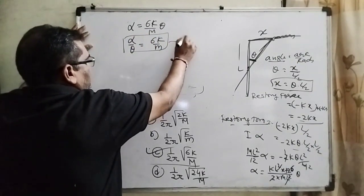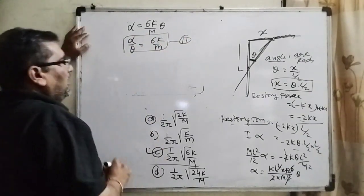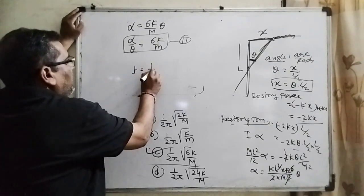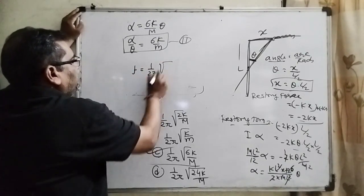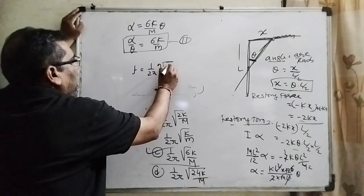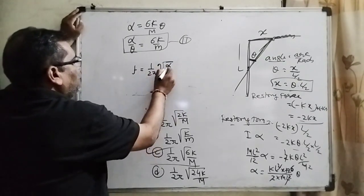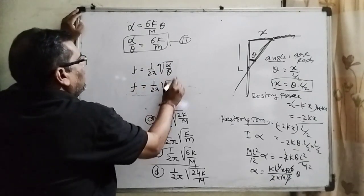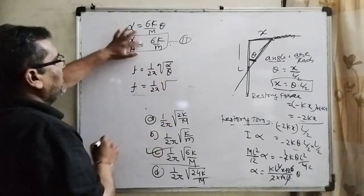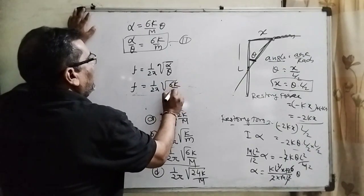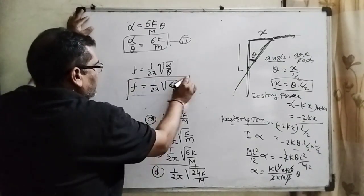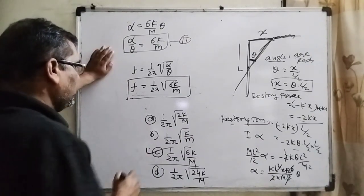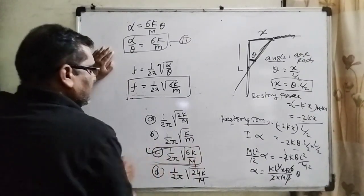The frequency of oscillation is given by f = 1/2π × √(alpha/theta). Substituting alpha/theta = 6K/M, we get f = 1/2π × √(6K/M). Comparing with the options, the correct answer is Option C.